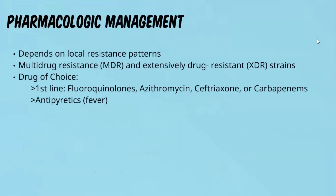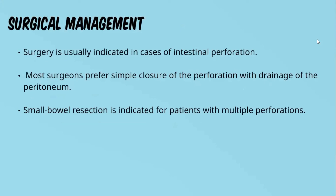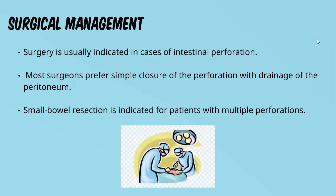Pharmacologic management depends on local resistance patterns, as different strains of Salmonella typhi may be multidrug-resistant or extensively drug-resistant. Generally, first-line drugs include fluoroquinolones, azithromycin, ceftriaxone or carbapenems, and antipyretics for fever. Surgical management is indicated in cases of intestinal perforation. Most surgeons prefer simple closure with drainage of the peritoneum, and small bowel resection is indicated for patients with multiple perforations.